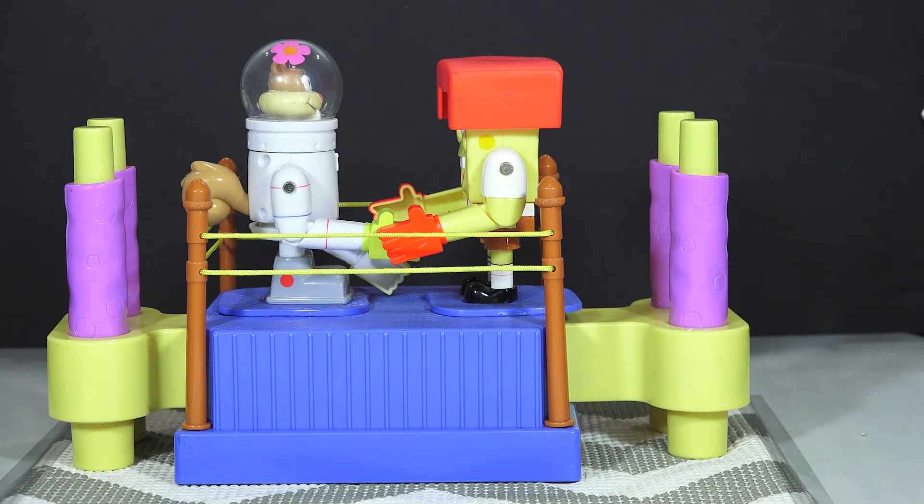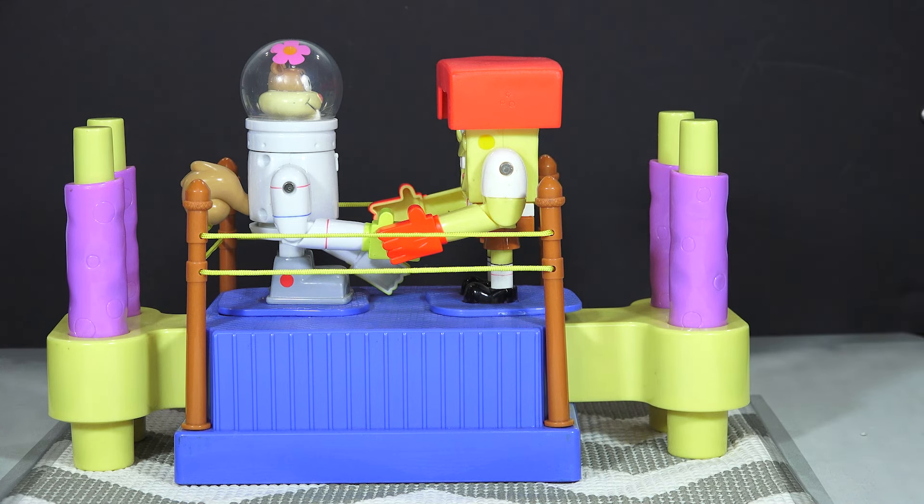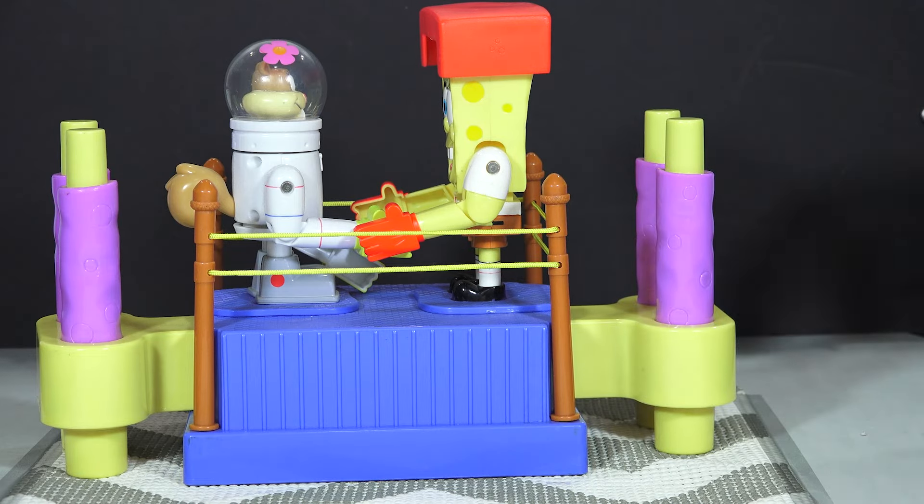All right. Well, there you go. That is the SpongeBob Rock'em Sock'em. Well, it's not really called Rock'em Sock'em. It's called, I've got to look at the box. I forgot. It's been a while. Karate Choppers. All right. So, there you go. Hope you enjoyed the video. We had fun making it. Thanks for playing, Audrey. You're welcome. Thanks for losing. I don't even have to do anything and I lose.